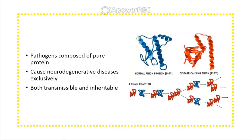Prions are infectious agents that are pure proteins. They are often implicated in neurodegenerative diseases and are both transmissible and inheritable. Prions work on existing proteins in an organism — one disease prion can alter the state of a normal functioning prion and turn it into a disease-state prion, which is then infectious throughout the organism for all proteins of that specific type.